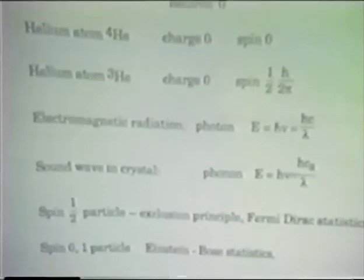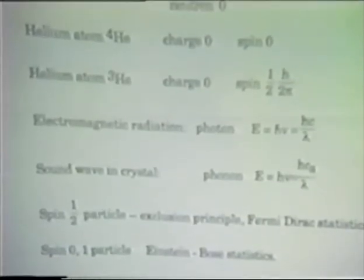Helium atoms, for example, have zero spin. Electrons have spin one-half and obey Fermi-Dirac statistics, otherwise we wouldn't be here, everything would collapse.